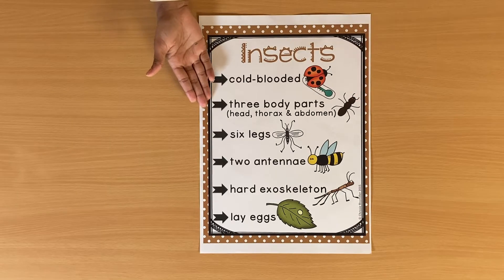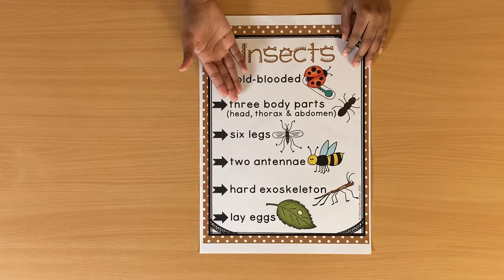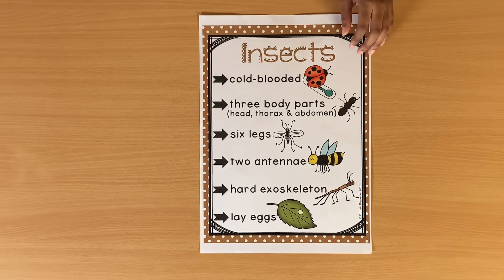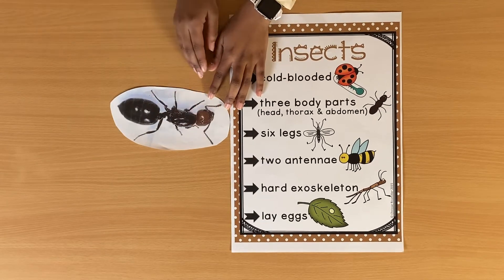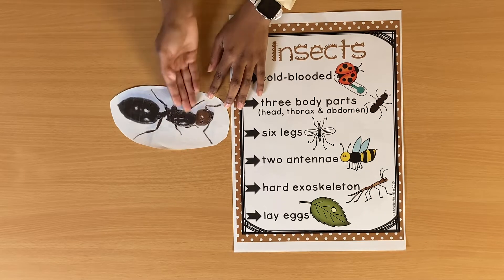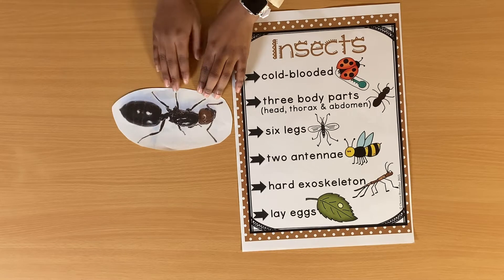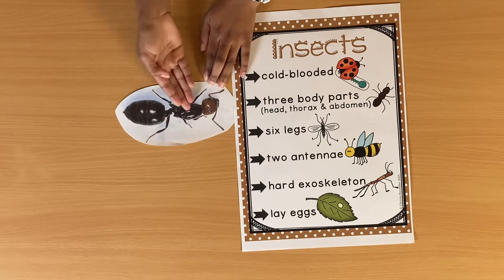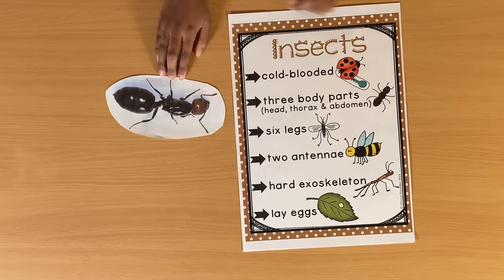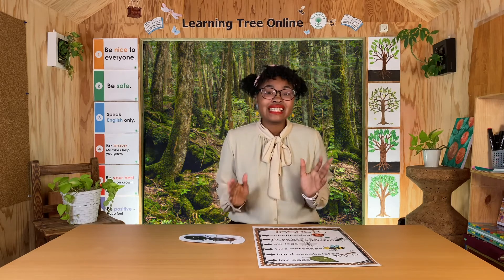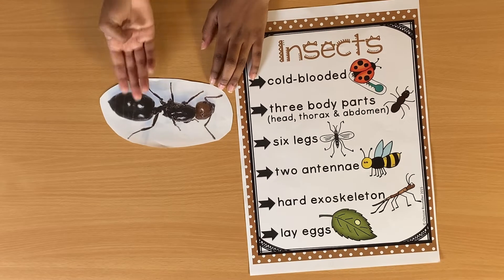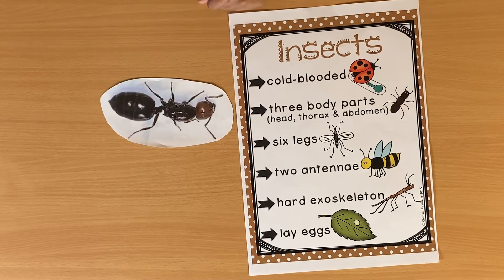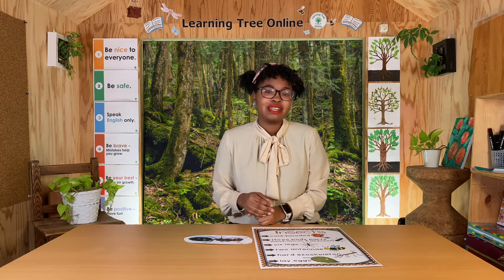Insects are made of three different body parts: a head, a thorax, and an abdomen. Let's look at this ant to find those three parts. This is the head, the part in the middle is the thorax, and the part at the back is the abdomen. All insects have these three body parts. They also have six legs — this is an easy way to tell if something is an insect. Let's count the ant's legs: one, two, three, four, five, six. Six legs shows that it's an insect.